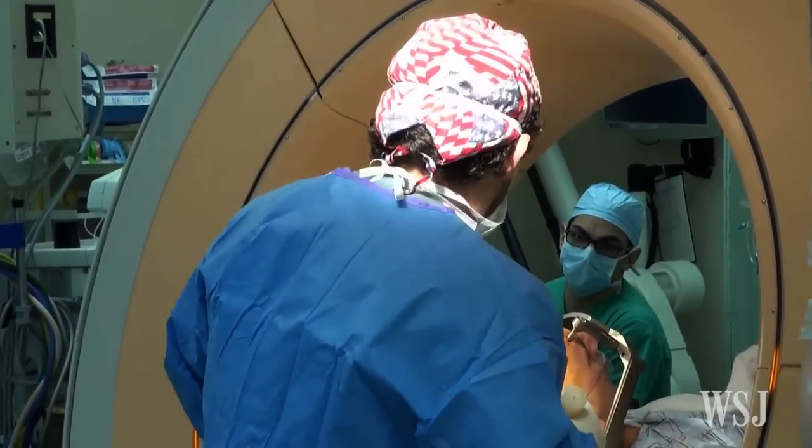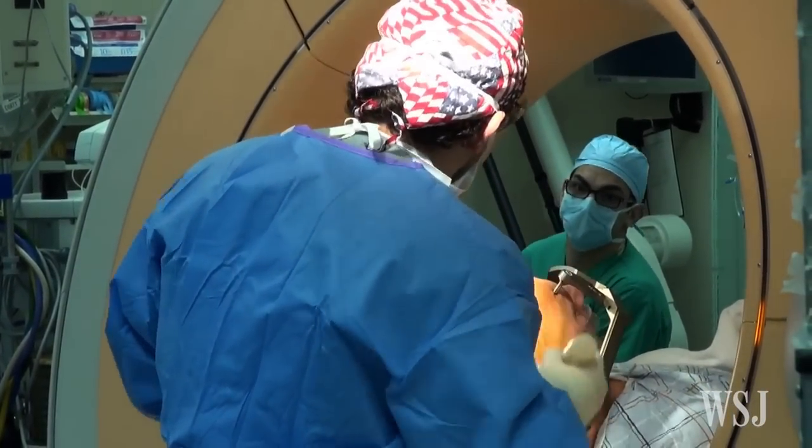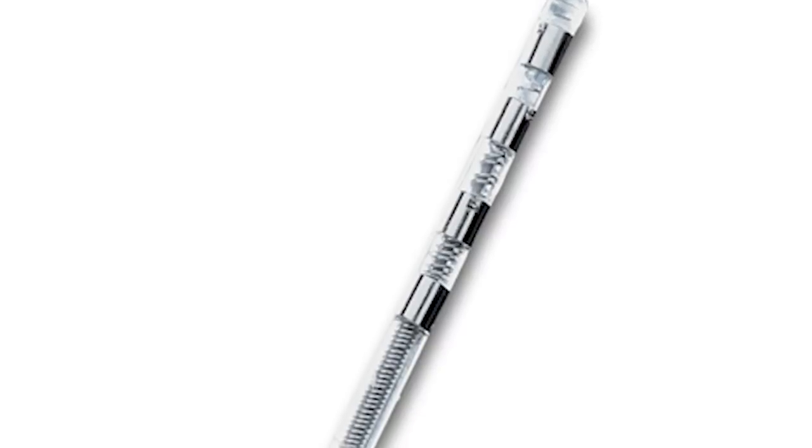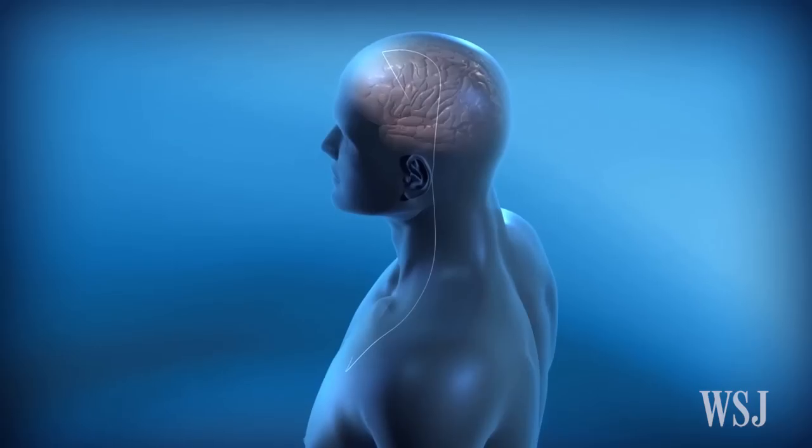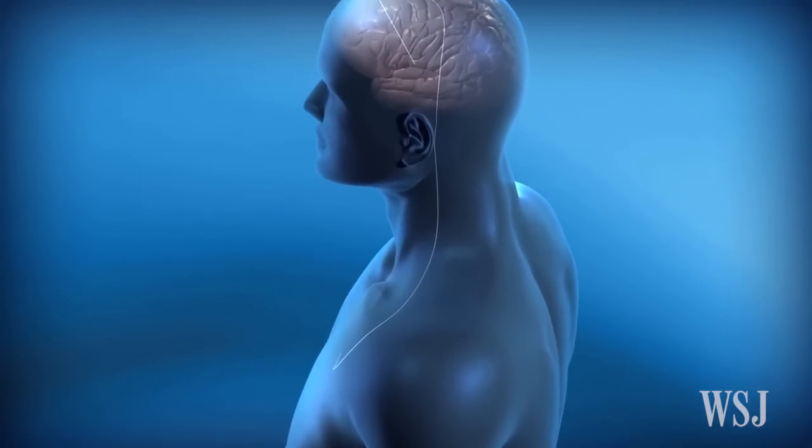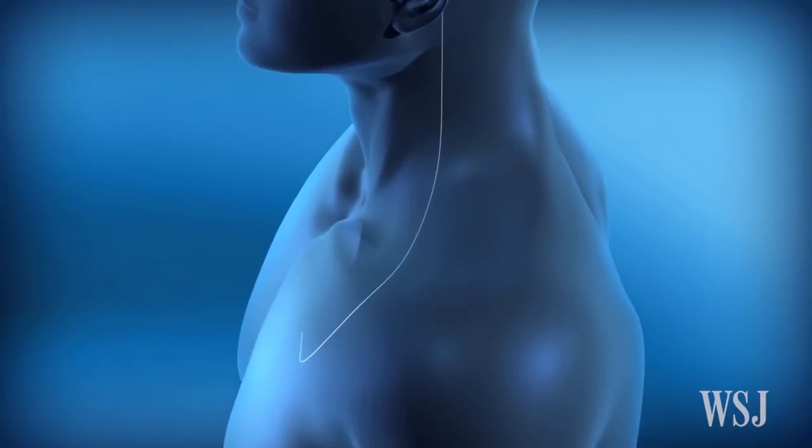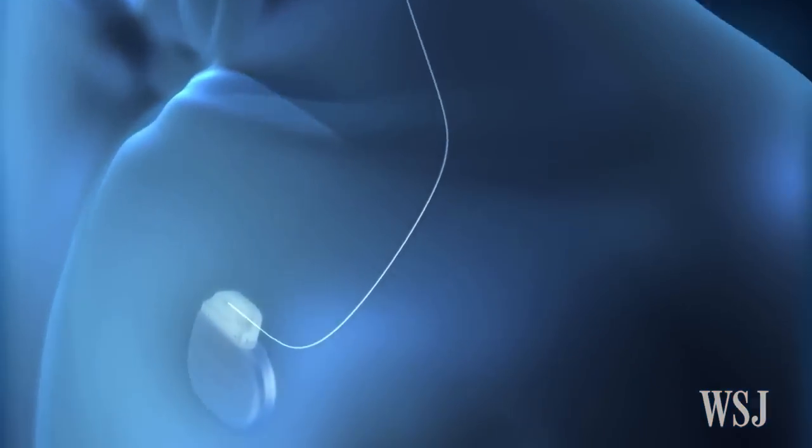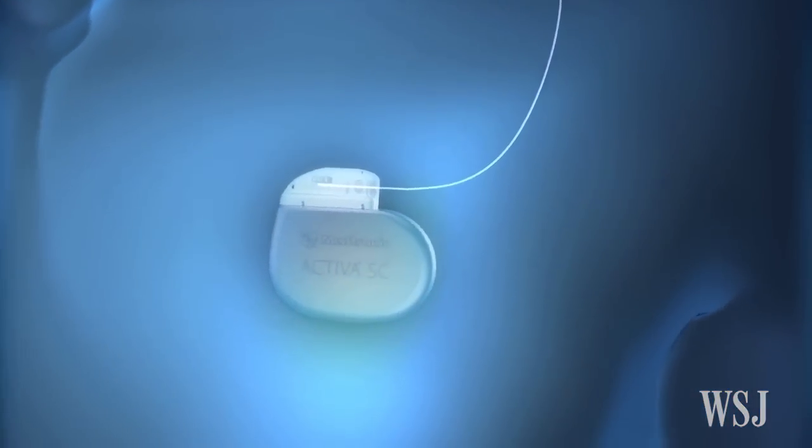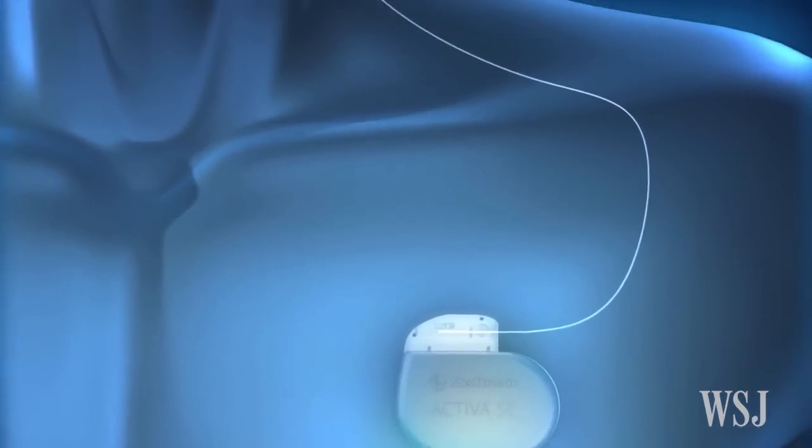Doctors then surgically implant electrodes on the targeted areas of a patient's brain using a thin probe called a lead. A wire attached to the lead runs through the head, neck, and shoulder under the skin to the chest area, where it attaches to a battery-charged pulse generator that initiates electrical impulses.